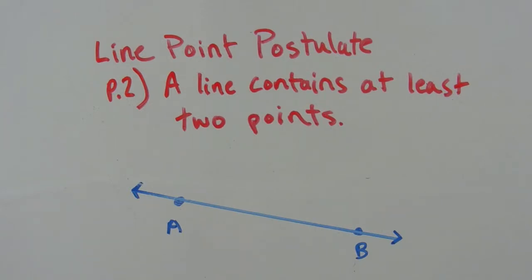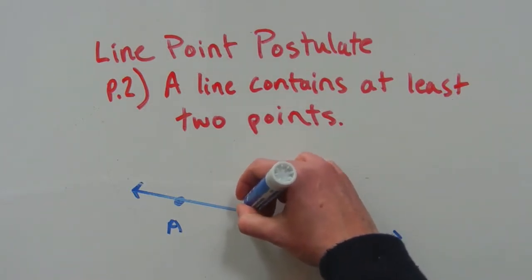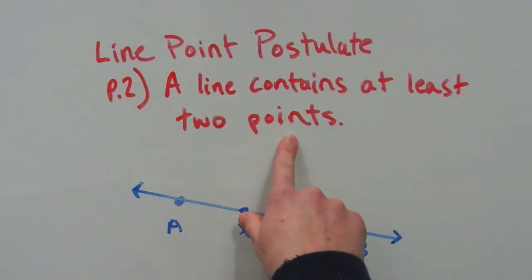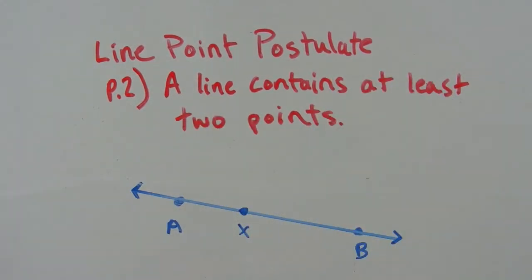A line can have more than two points. We can have another point on this line. Let's name this point X. The line still contains at least two points. So this is another true statement relating geometric terms, a line and a point. This is our second postulate.